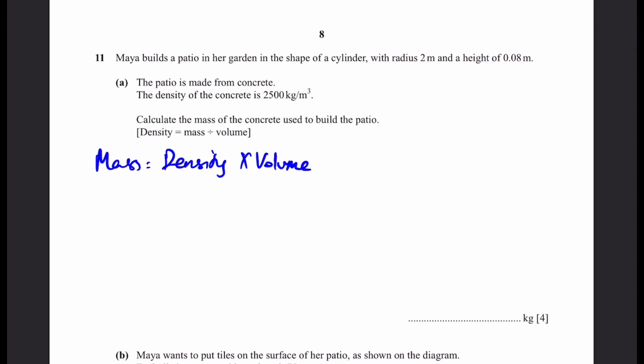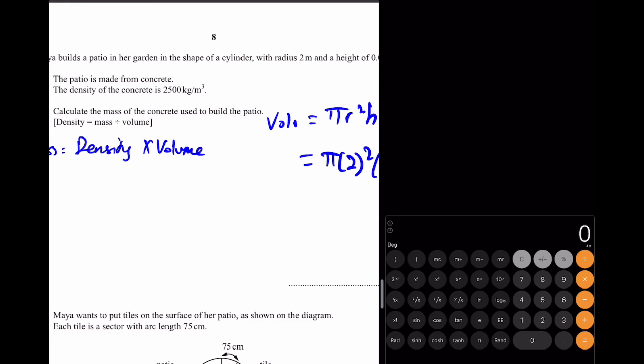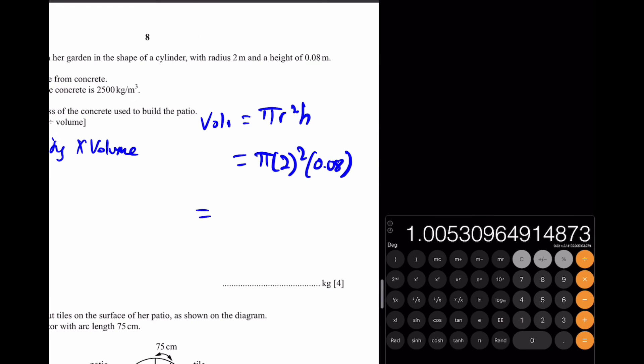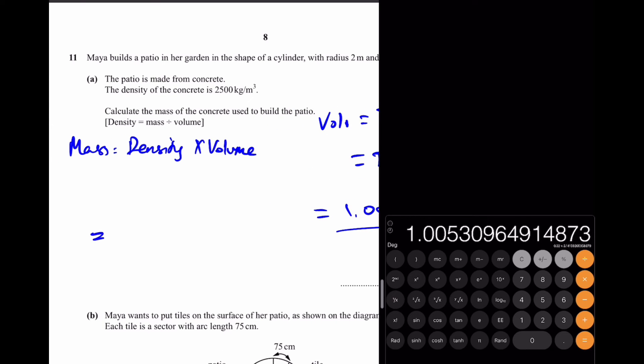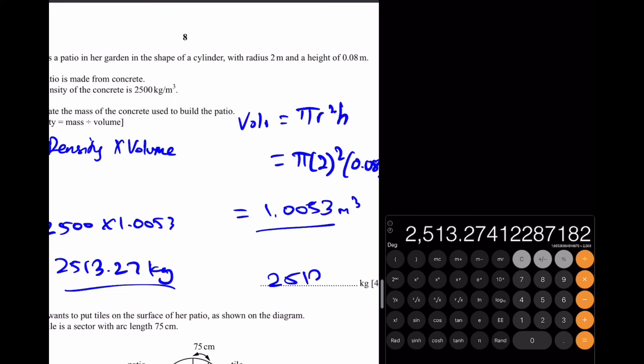Since we need to find the mass, we have the density, we need to find the volume to get the mass. We have the radius and height of the cylinder. The volume is going to be equal to pi r squared times h for any cylinder. In this case, it's pi times 2 squared and then times 0.08, all in meters. 2 squared is 4 times 0.08, and then we do times pi to get 1.0053 meters cubed. Now the mass is going to be density times volume, which is 2500 times 1.0053. We multiply by 2500 to get 2513.27 kg, and that will be our answer.